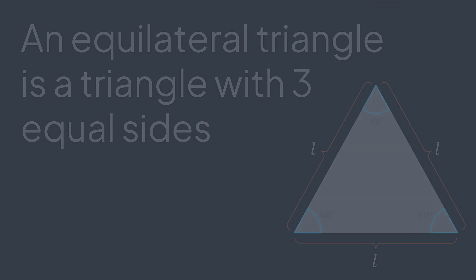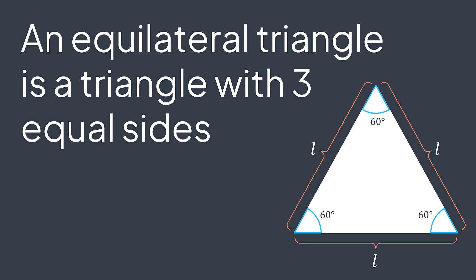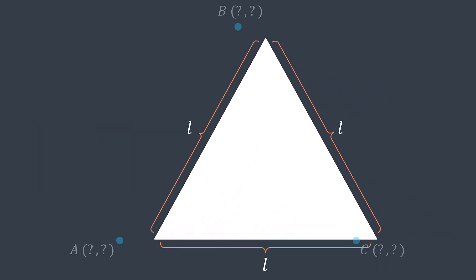We first need an equilateral triangle. An equilateral triangle has the property of having three equal sides. Let's name the length L. To create an equilateral triangle, we need coordinates of the three points A, B, and C.